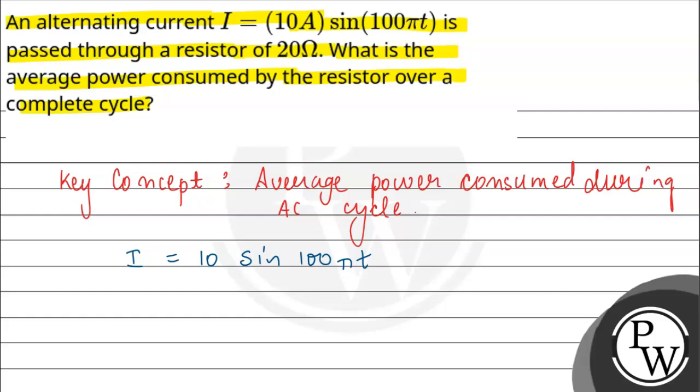The maximum value or amplitude of current I₀ is 10, and ω is the angular frequency with value 100π. We have a resistance through which it passes, with value R = 20Ω.